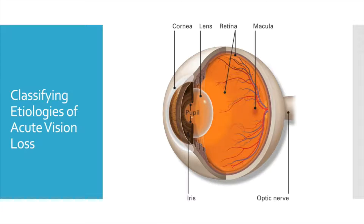We will discuss processes that fall into these categories in greater depth in subsequent videos. This video will cover how to use history and physical to narrow down the possible etiologies of a patient's acute vision loss.